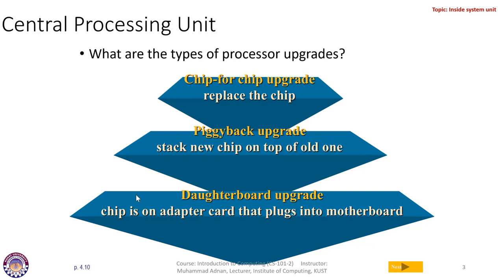If you have bought a computer system but want to upgrade your processor, there are different options. The first is a chip-for-chip upgrade, where you replace your old chip and install a new chip — for example, replacing a Core i3 with a Core i7. The second is a piggyback upgrade, where you stack a new chip on top of the old one so both work together. The third is a daughterboard upgrade, where the chip is on an adapter card plugged into the motherboard.